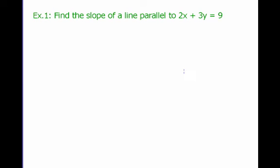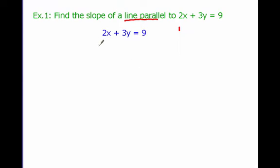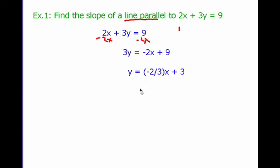Let's look at an example. Find the slope of a line parallel to 2x plus 3y equals 9. We need to know that if we find the slope of this line, the slope of a parallel line will be equal to it. To find the slope, I need to solve for y. Starting with 2x plus 3y equals 9, subtract 2x on both sides to get 3y equals negative 2x plus 9, then divide by 3 to get y equals negative 2 thirds x plus 3.